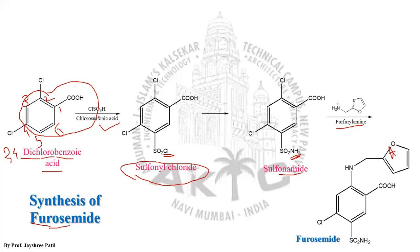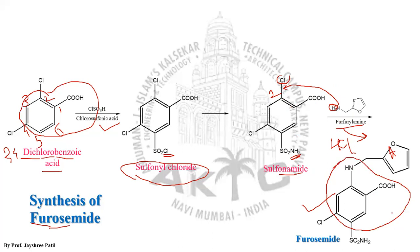When the sulfonamide reacts with furfurylamine, there is a loss of HCl. The furfurylamine undergoes nucleophilic displacement at the second position, where the chlorine is eliminated and the furfurylamine is added. This portion of the structure resembles anthranilic acid, which is why furosemide is classified as a sulfamoyl anthranilic acid derivative.